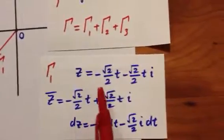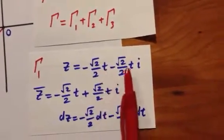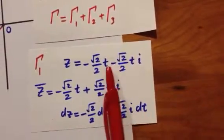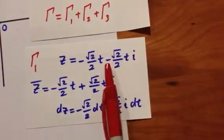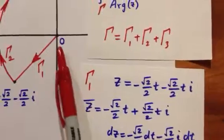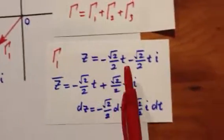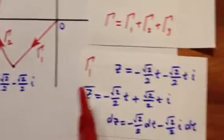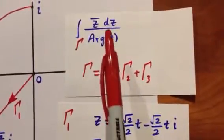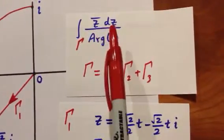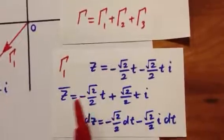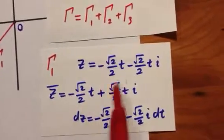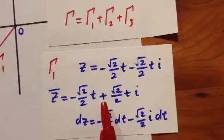So we can parametrize it as Z equals, multiply each of these by T, so when T is 0, Z is here. When T is 1, Z is here. And then to set up the numerator we need Z bar and DZ. Z bar, which is the conjugate, is the same thing except that the sign is changed to plus.